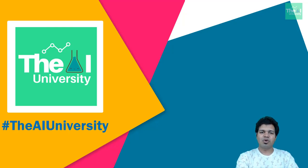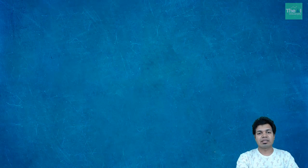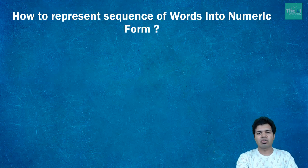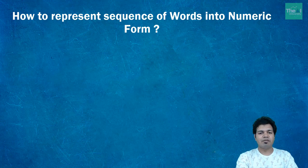In this video I'm going to cover how neural networks can understand text data — data which has English words and sentences. We know that neural networks utilize numbers to understand data, so the input to a neural network is always in numeric form. Now, what if we have data in text form? It is very important to represent this text data in numeric form so that our deep neural networks can be trained on it.